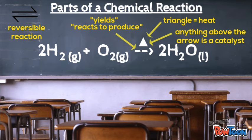A double-sided arrow is a reversible reaction, meaning that the products and reactants will kind of flow back and forth until an equilibrium is reached.